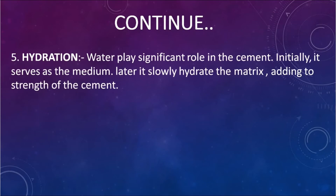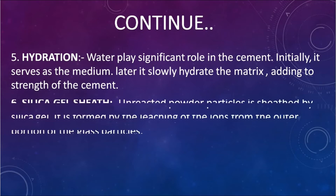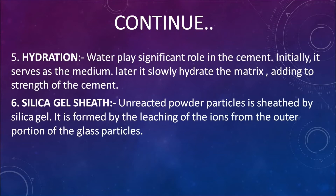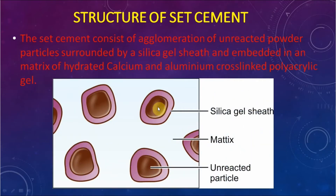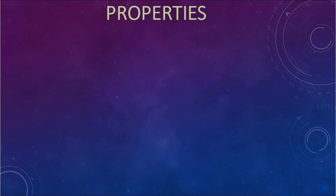Hydration phase: water plays a significant role in the cement. Initially it serves as the medium; later it slowly hydrates the mix, adding to the strength of the cement. Silica gel sheath: unreacted powder particles are sheathed by silica gel, which is formed by leaching of ions from the outer portion of the glass particle. Structure of set cement: unreacted particles are surrounded by silica gel and are embedded in a hydrated calcium and aluminum crosslinked polyacrylic gel matrix.